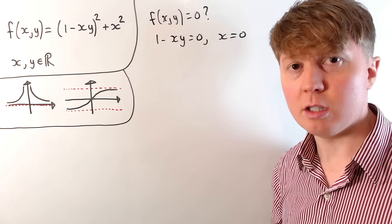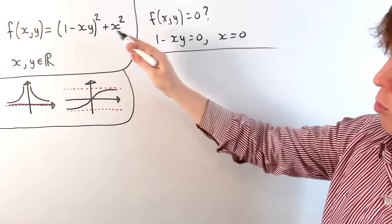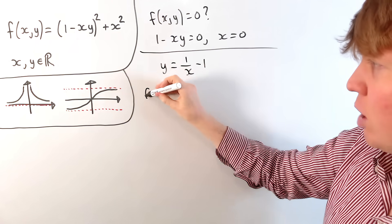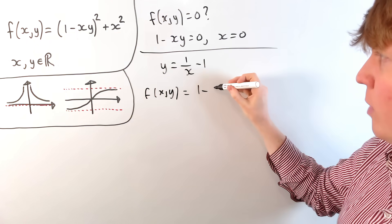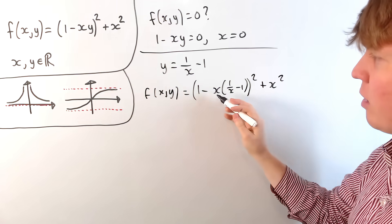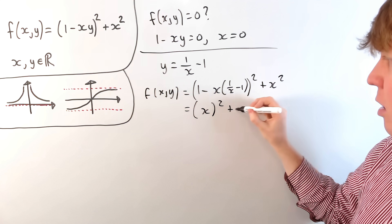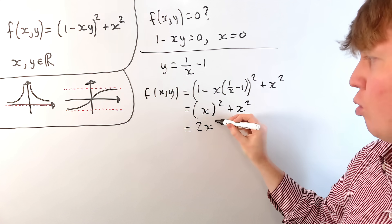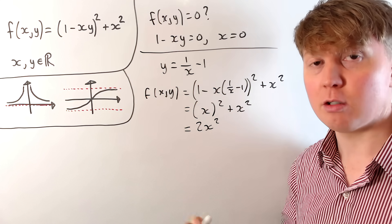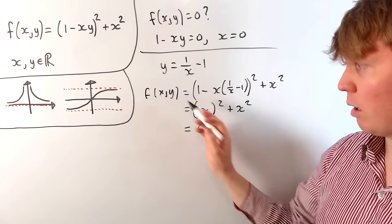But are we sure that 0 is our infimum? Is there some lower bound we could choose that's bigger than 0? We could substitute in y = 1/(x) - 1 and substitute this in. So then f(x,y) becomes (1 - x·(1/x - 1))² + x². Expanding within the bracket, we get 1 - 1 and then minus x·1, so we literally just get x² + x², which is 2x².